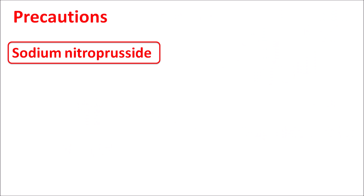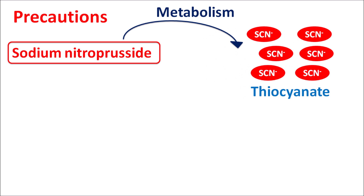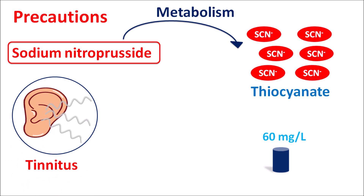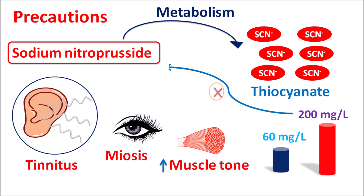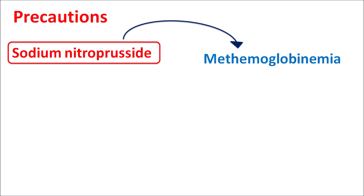On metabolism, sodium nitroprusside can also release thiocyanate anions. Thiocyanate can accumulate within the body, and when levels reach up to 60 mg/L it can produce conditions such as tinnitus (buzzing noise in the ears), miosis (pupillary constriction), and hyperreflexia with increased muscle tone. Along with these symptoms, severe headache, nausea, and vomiting may be observed. At high doses, thiocyanate can accumulate up to 200 mg/L, at which point sodium nitroprusside should be stopped to eliminate thiocyanate toxicity.